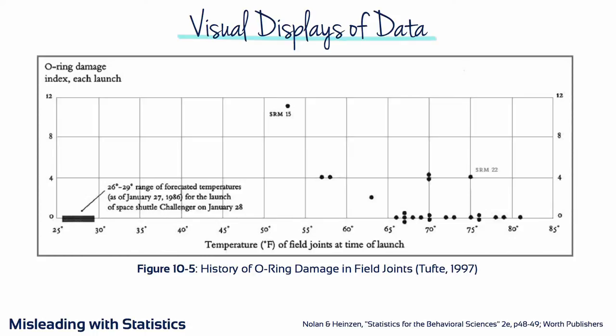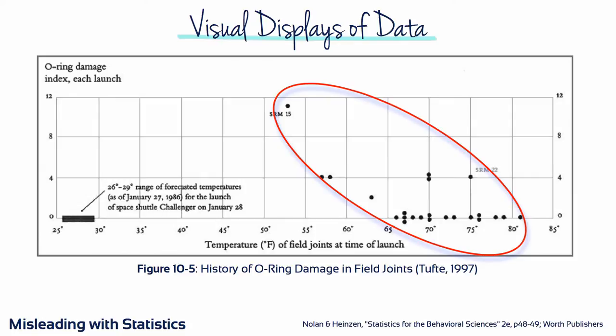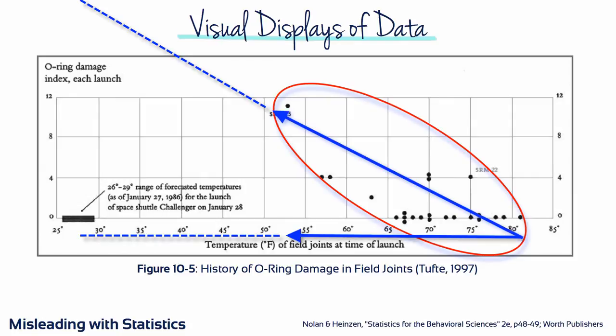Unfortunately, the graphs presented to NASA, both before the Challenger exploded and during the investigation that followed, were not created in such a way that clearly demonstrated the relation between temperature and O-ring damage. The Morton Thiokol engineers who created the graphs didn't need fancy graphs — they needed clearer graphs. The data represented in Figure 10-5 show a strong correlation that indicates a relationship between low temperature at time of launch and substantial O-ring damage.